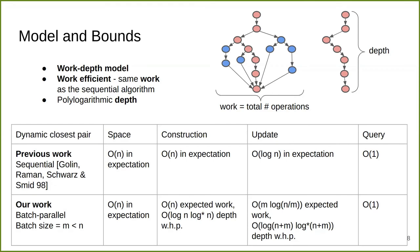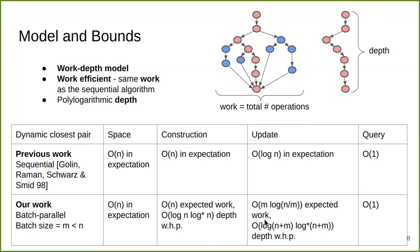In the table below, we summarize and compare the work bounds for previous work — the sequential dynamic closest pair data structure by Gowling, Robin, Schroetz, and Schmidt — as well as our work, which is a batch parallel dynamic closest pair data structure that takes a batch size of M. Both take O(n) space in expectation. For construction, both take O(n) work in expectation, and our parallel construction also achieves polylogarithmic depth. For the sequential structure, each update takes O(log n) work; processing M updates sequentially takes O(M log n) work. Our parallel batch dynamic structure takes only O(M log(N/M)) work, which is less — so we are faster even running sequentially — and we also achieve polylogarithmic depth. The query takes constant time.